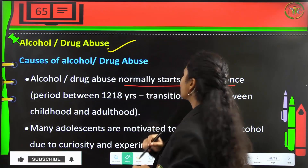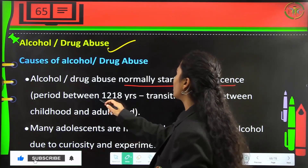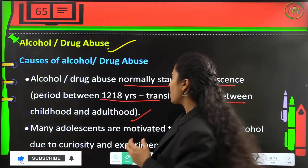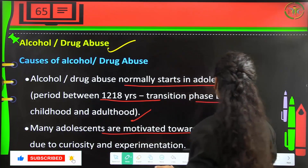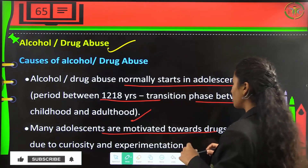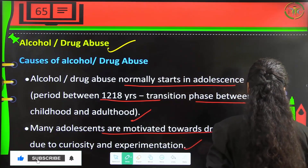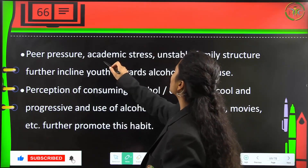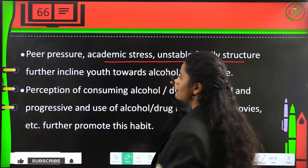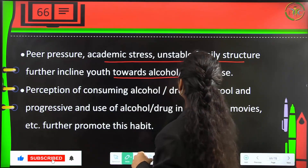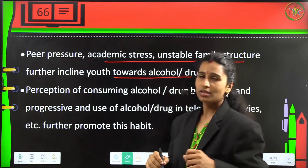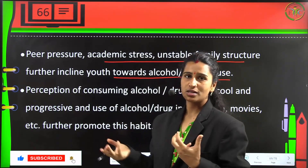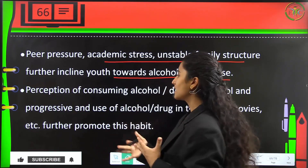Alcohol or drug abuse normally starts in adolescence — the period of 12 to 18 years, the transition phase between childhood and adulthood. Many adolescents are motivated toward drugs and alcohol out of curiosity and experimentation, and then get addicted. Peer pressure, academic stress, and unstable family structure push youth toward alcohol and drug abuse.